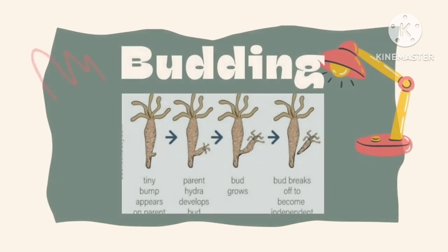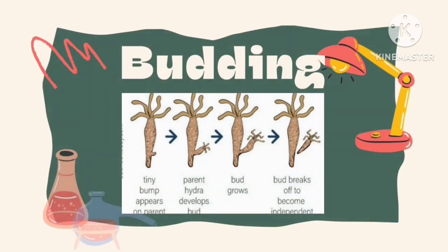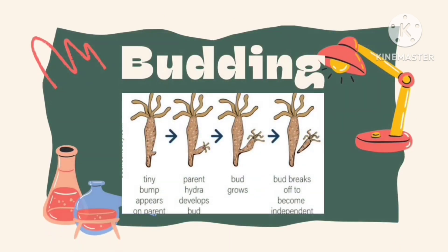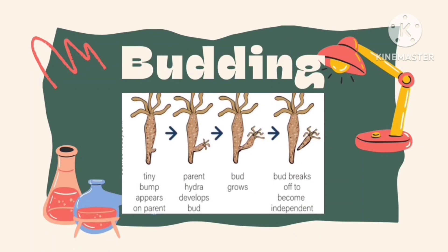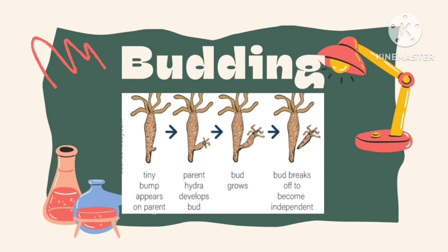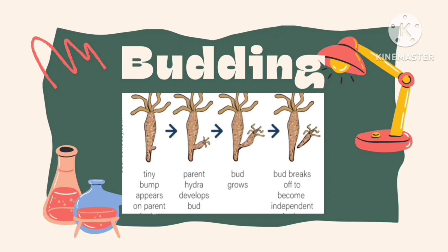Budding happens when an outgrowth of the parent animal develops into a new animal. Plants also develop a new plant through the process of budding. A bulge appears on the parent's body, grows into a bud, and eventually becomes a miniature copy of the parent.